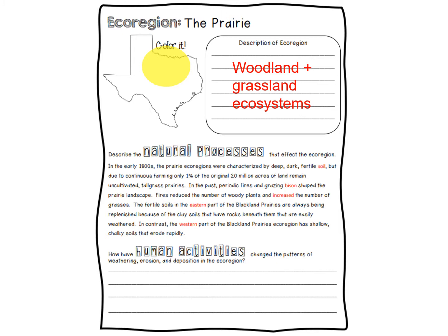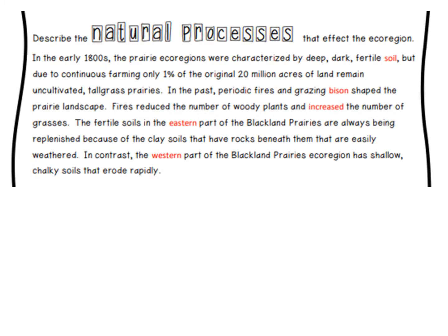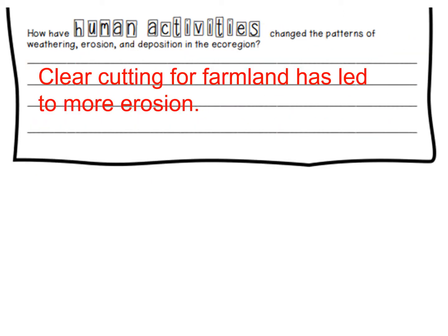The prairie is right between the plains, which are in the panhandle, and the woods, which is in East Texas. They have a very soft type of soil here which can erode easily. Same thing with overgrazing that has happened in this area. One way we've affected it is clear cutting or deforestation — we take away the vegetation and then it's not holding on to the soil anymore, so it weathers away.